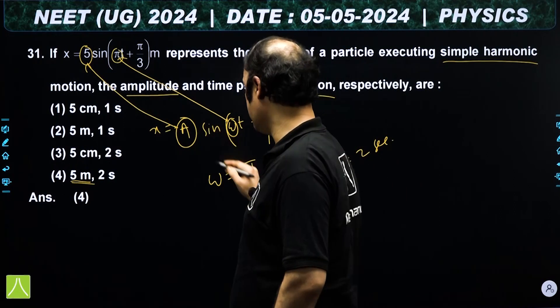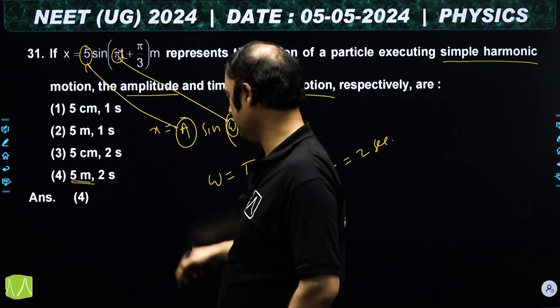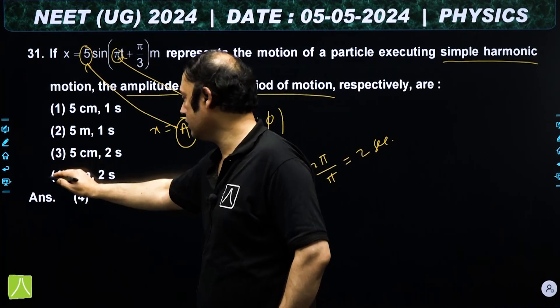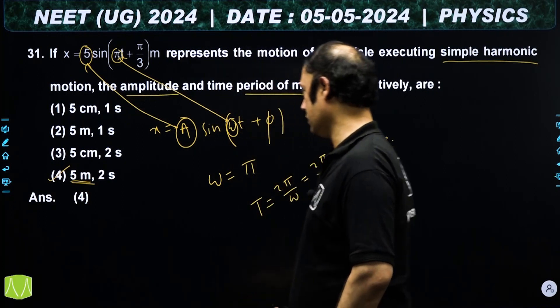So the SHM amplitude is 5 meters and the time period is 2 seconds. The fourth answer is correct.